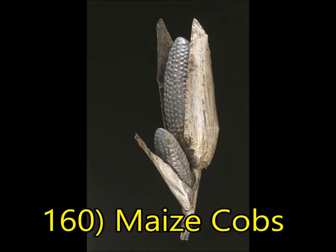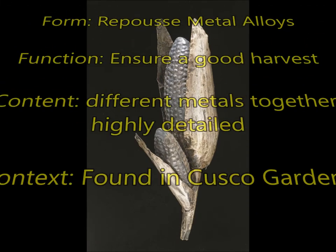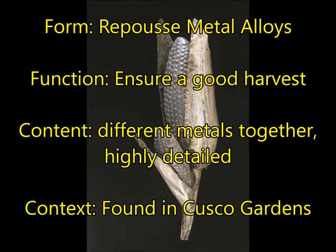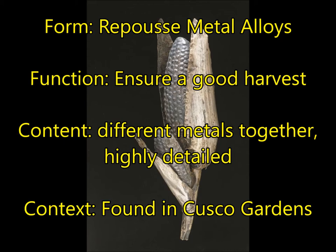Found inside the city of Cuzco, in gardens outside of the temple, were the maize cobs. You need to know the word repoussé, which means the metal was beaten from the other side to make a very detailed shape of each corn kernel. For function, make sure you write 'ensure a good harvest' — sort of like a charm. These are associated with the city of Cuzco, so these two works go together.